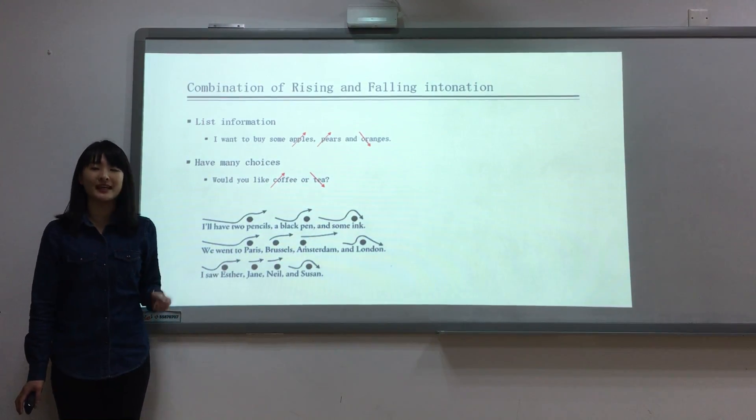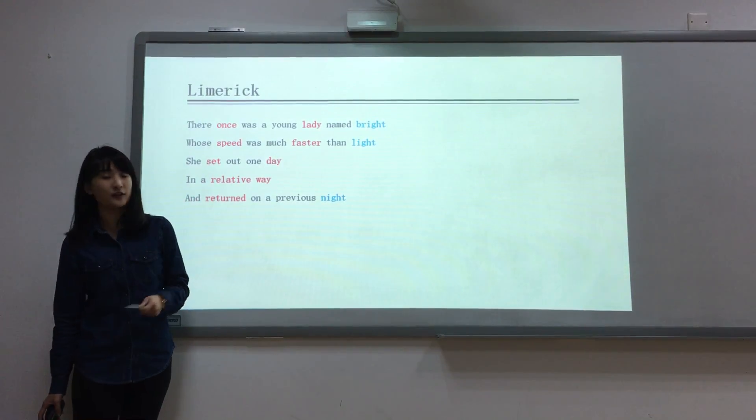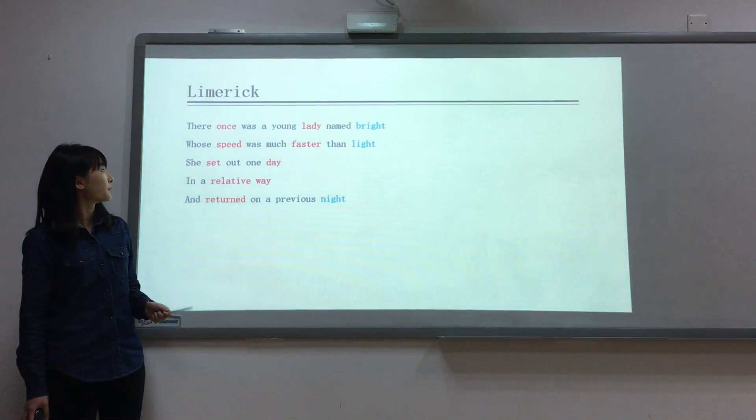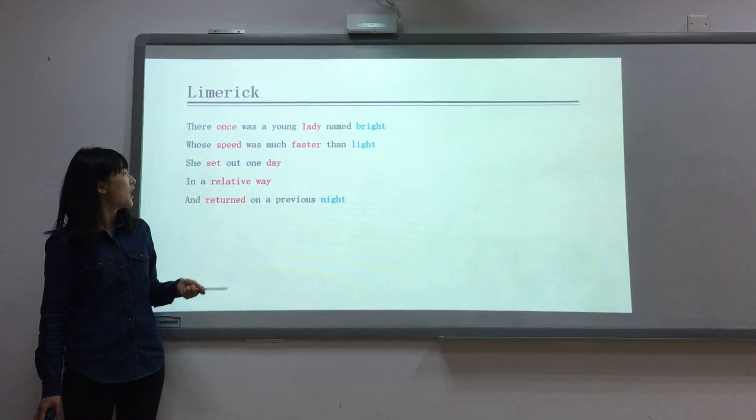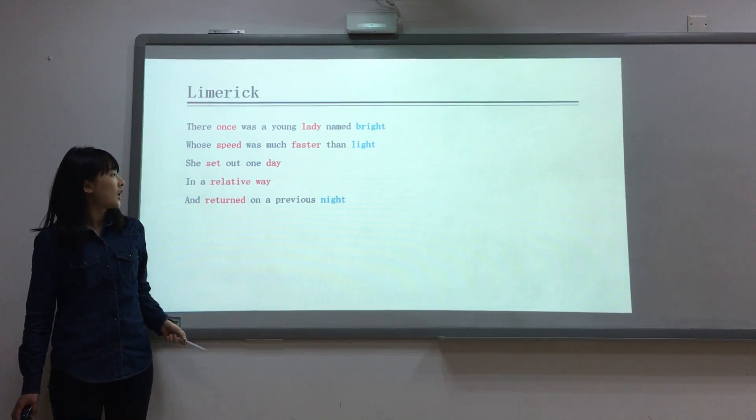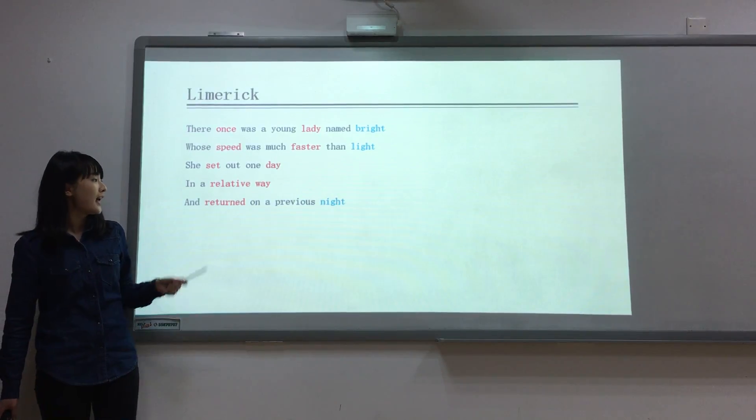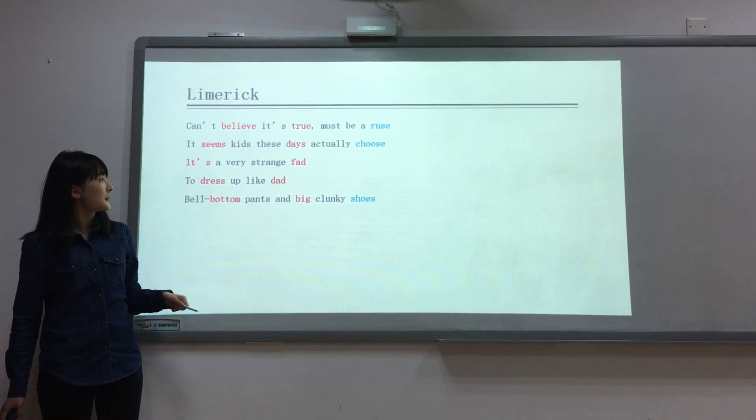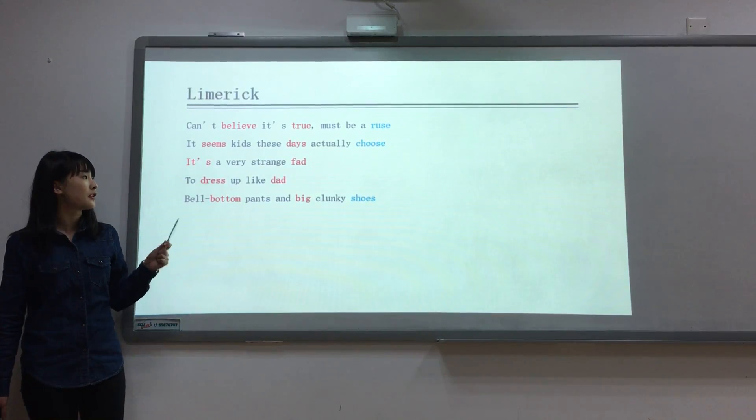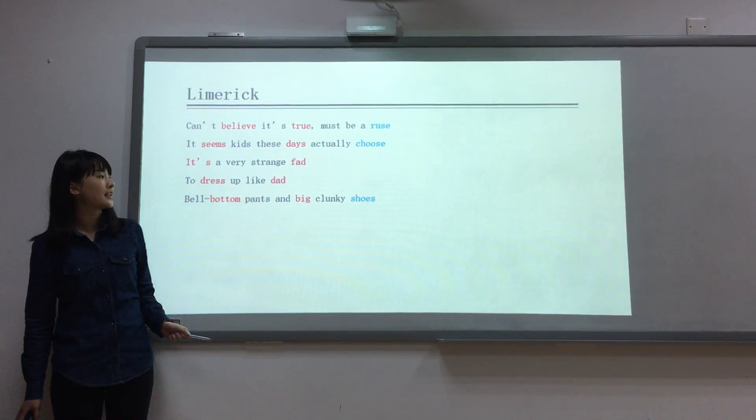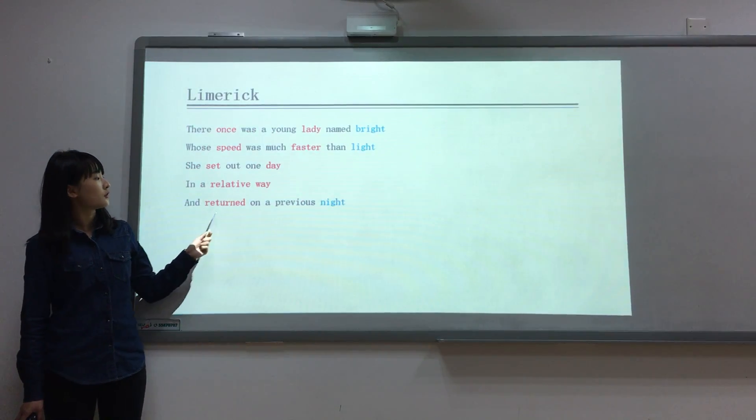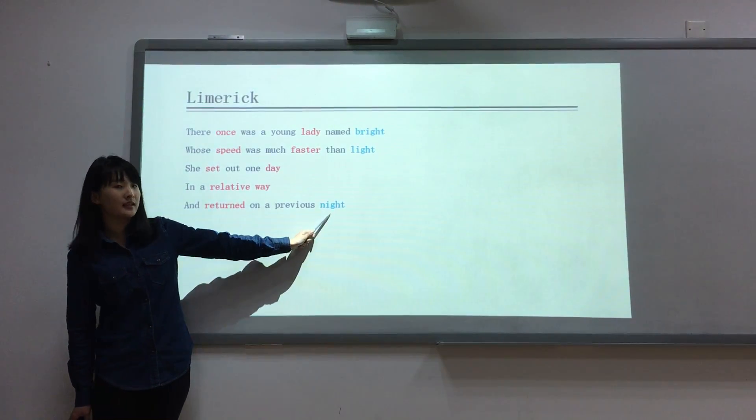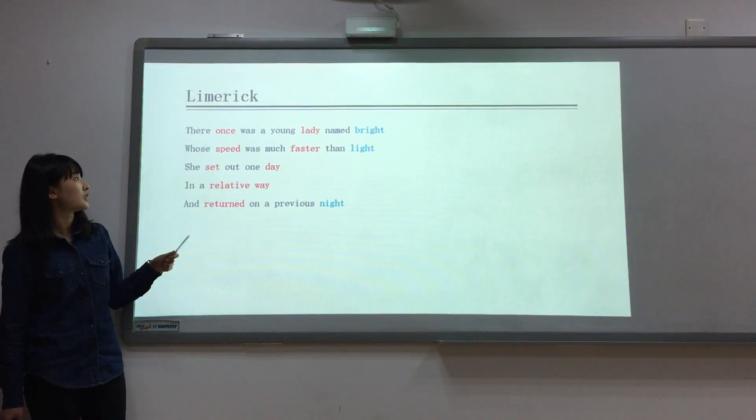Now it's our time to use intonation for fun. I found two limericks and you can see there are two different colors here. After I read, can you tell me the meanings of these two different colors? Red means falling intonation and white means rising intonation.